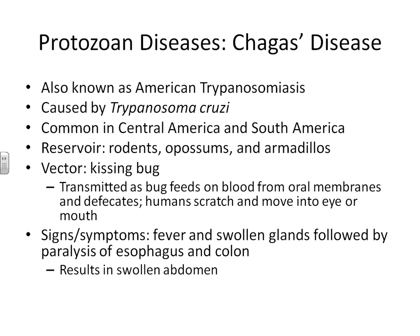This bug feeds from blood on the oral mucosa. While it's feeding off of blood, it typically defecates during its feeding process. Once this bug feeds off of a rodent that is infected and then moves and feeds off of a human, the human will scratch around their mouth or their eye, somehow moving that feces into their mouth or eye, and now that human is infected with the protozoan. Once infected, they immediately begin to run a fever and all of the glands swell. This is going to be followed by paralysis of the esophagus and colon, and it can lead to coma and eventual death, but it's very treatable if medication can be obtained. One of the hallmark signs of this disease is an extremely swollen abdomen due to all of the inflammation throughout the digestive system.